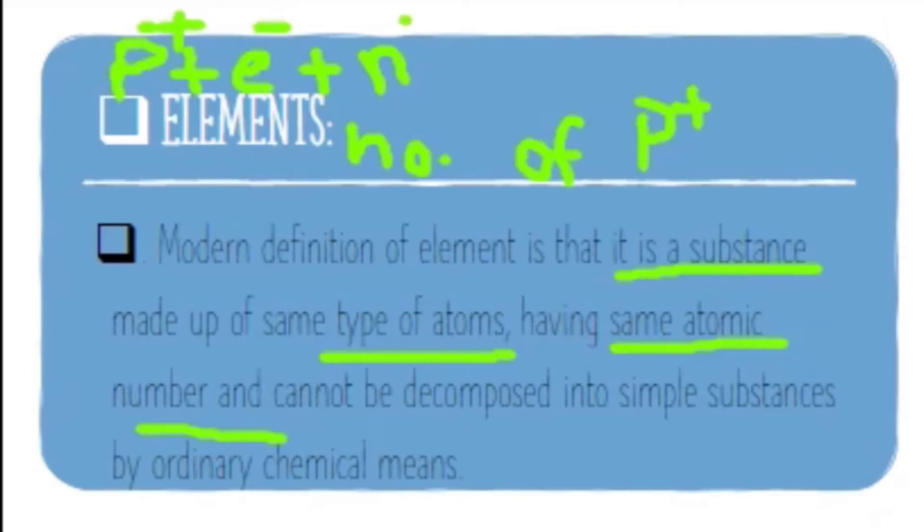Protons have positive charge, electrons have negative charge, and neutrons have zero charge. If we have two atoms which have the same atomic number, they will be able to make elements and cannot be decomposed into simple substances by ordinary chemical means. For example, oxygen—two oxygen atoms will be made so we will get O2, and O2 is an element.